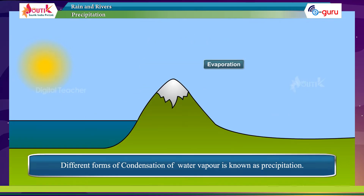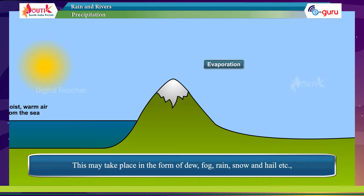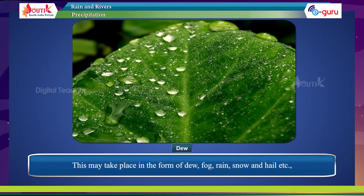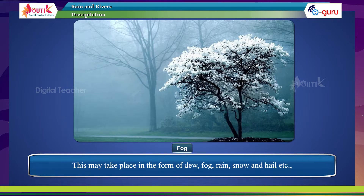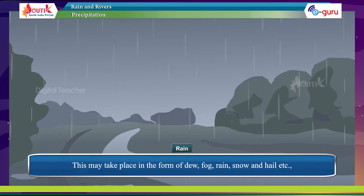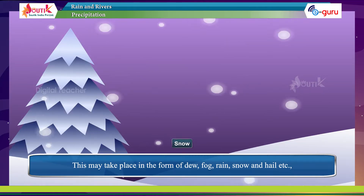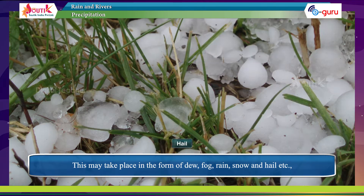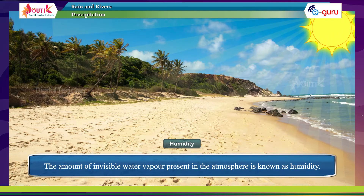Precipitation: different forms of condensation of water vapor are known as precipitation. This may take place in the form of dew, fog, rain, snow, hail, and so on. Humidity: the amount of invisible water vapor present in the atmosphere is known as humidity.